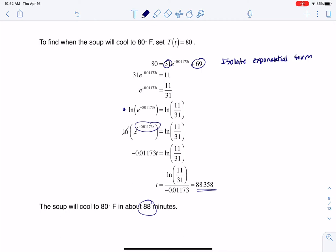And it told me to round to the nearest minute, so there I am, it takes about 88 minutes for that soup to cool to 80 degrees. So you can leave it out for a little over an hour, but actually that's closer to an hour and a half and it's down at 80 degrees. All right, thanks so much everyone, bye.